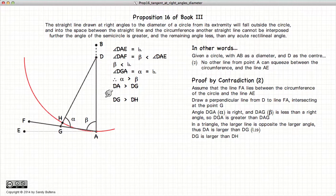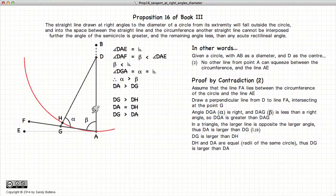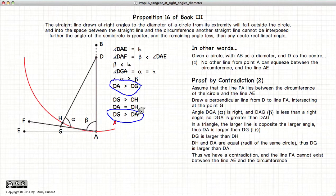Now let's look at our line DG. Since it falls outside of the circle, we label the point where it crosses the circle as H. Now DG is greater than DH. But DH is equal to DA because they are both radii of the same circle, so we have that DG is greater than DA. But we've already said that DA was greater than DG, and here we're saying DG is greater than DA — these cannot both be simultaneously true, and hence we have our contradiction. Having obtained our contradiction, we have proven that there is no line that can squeeze between EA and the circumference of our circle.